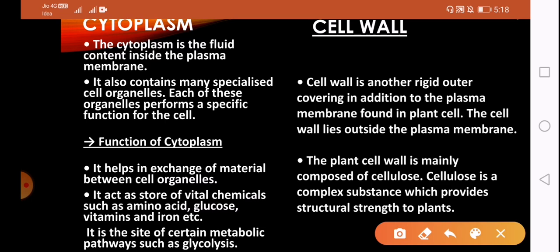Next topic is cell wall, and it's your last topic in structure organization. Cell wall is a rigid, tough structure which is present outside the plasma membrane in plant cells. The plant cell wall is composed of cellulose, which provides structural strength to plants.